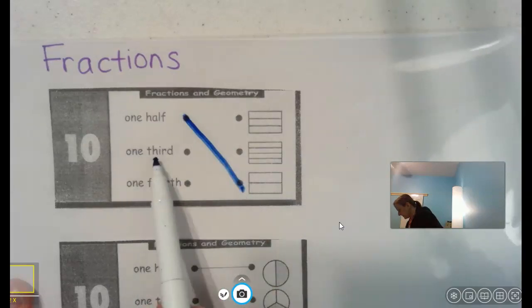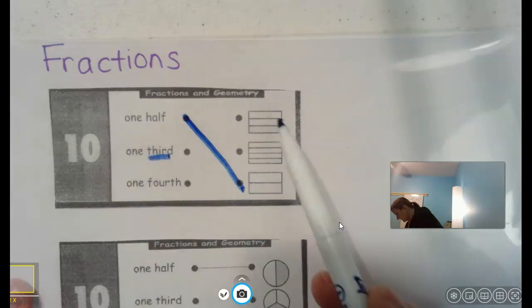One third. Remember, third means three. So find the one that's split into three parts. One, two, three. That's the one right there.